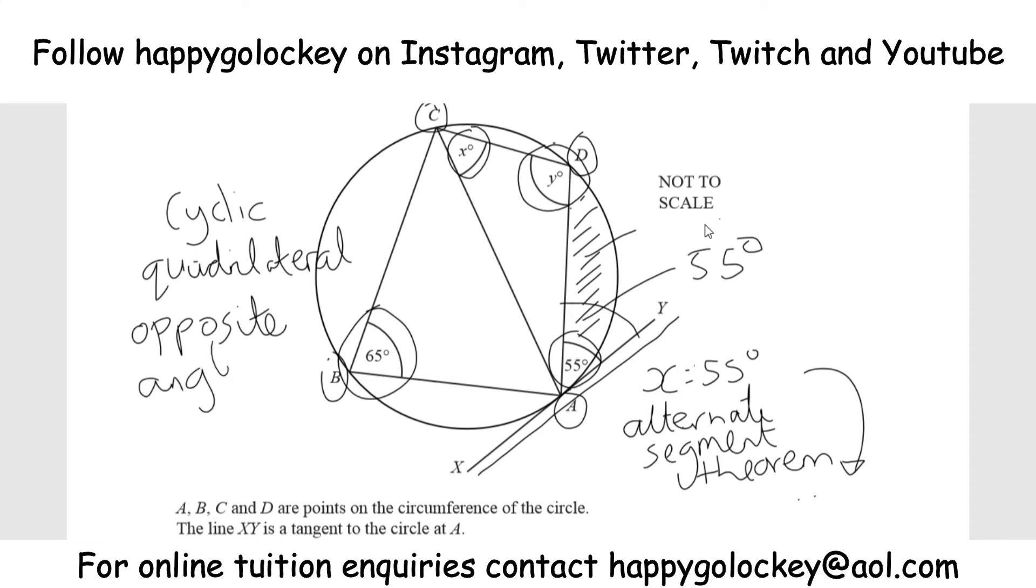And one thing from the circle theorem you need to know is that opposite angles add up to 180. So if opposite angles add up to 180 in total, then we can say that Y plus 65 has to make 180.